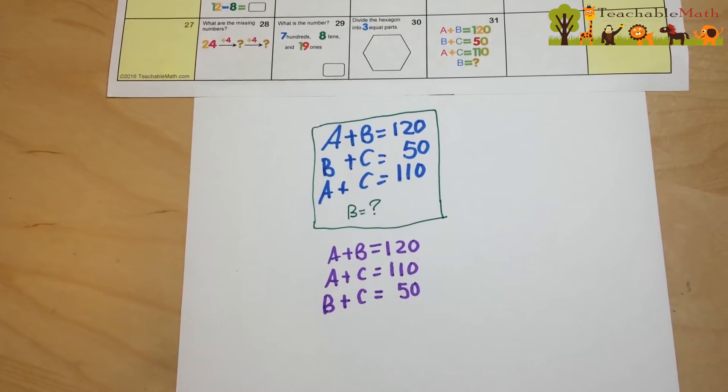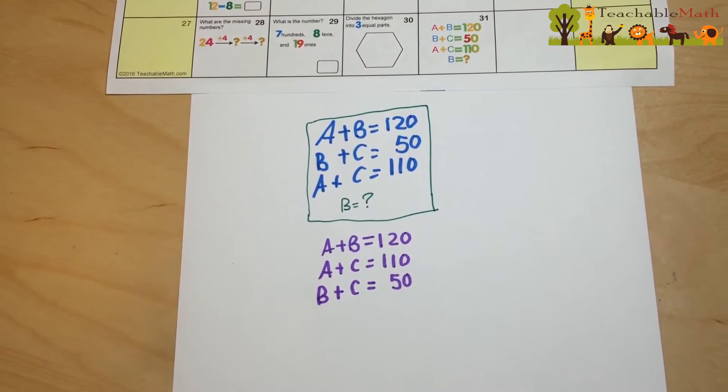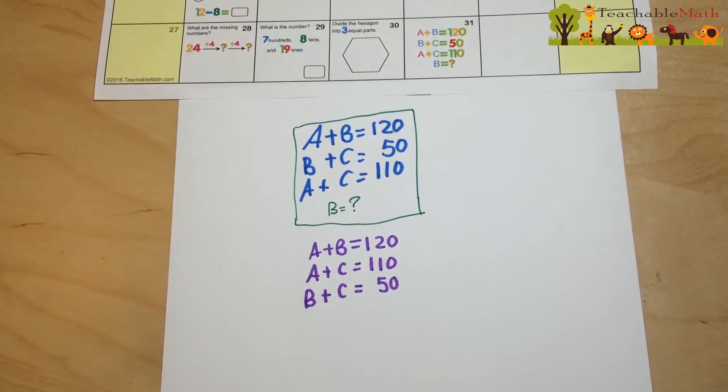Since these two numbers have to be the same and A plus B equals 120 and A plus C equals 110, I know that B has to be 10 more than C.